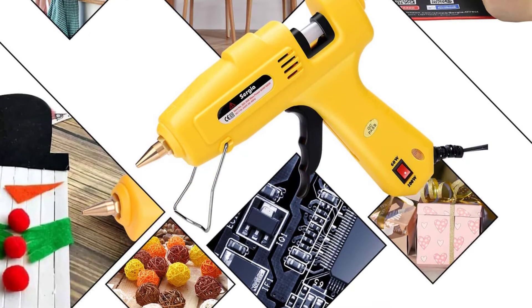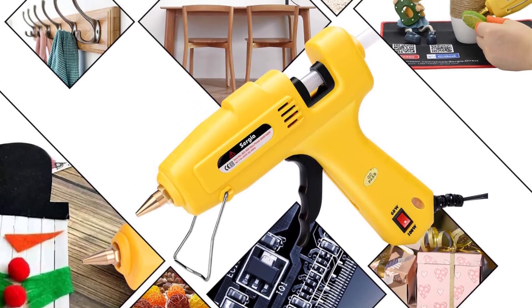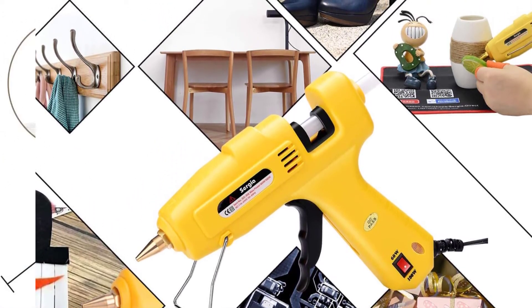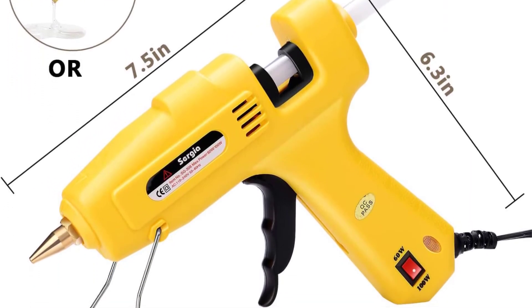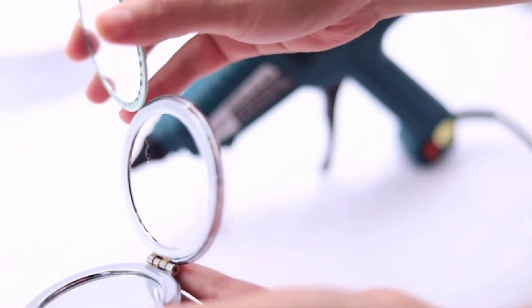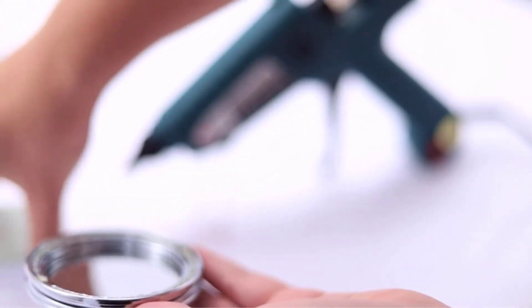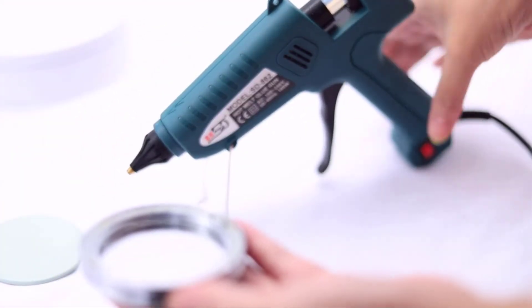This electric corded kit is perfect for home, office, and workplace DIY projects. With a 100W dual power switch and ergonomic design, internal safety fuse and nozzle with pressure valve, the glue may be used effectively and continuously. Aside from an excellent customer rating due to its reliability.